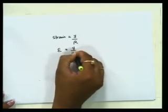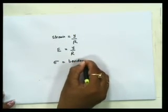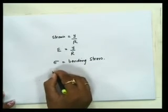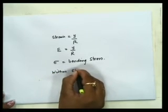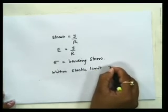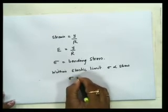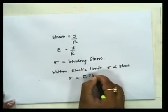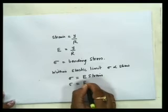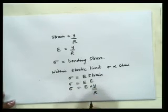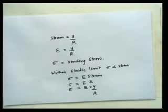Bending stress is denoted by sigma. Since the fibers obey Hooke's law, within the elastic limit stress is proportional to strain: sigma = E × epsilon. Substituting epsilon = Y / R, we get sigma = E × Y / R. This is the bending stress formula derived from simple bending theory.